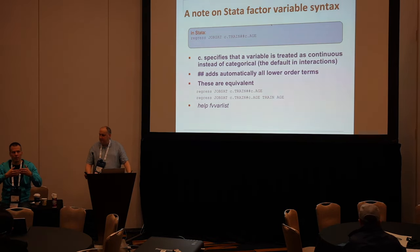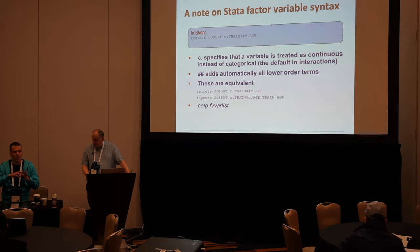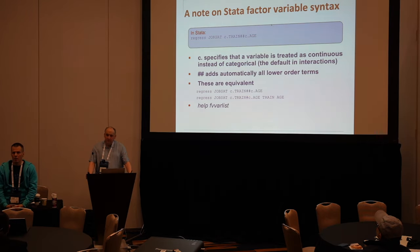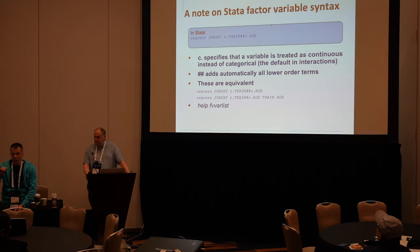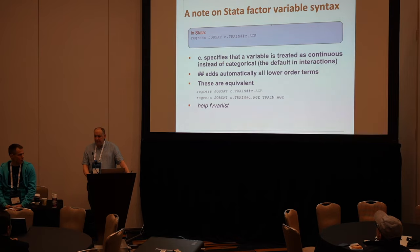Calculating the interaction before running the regression is not advisable for a couple of reasons. First, it's an unnecessary extra line of code. More importantly, if you specify the interaction as part of the model, then all post-estimation commands you run after the regression will be aware of that interaction. If you create it as a variable, any Stata command after the regression would not know that variable is actually an interaction. So always, in R and Stata, specify interactions in the model — don't create variables.